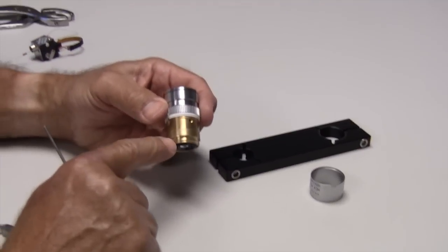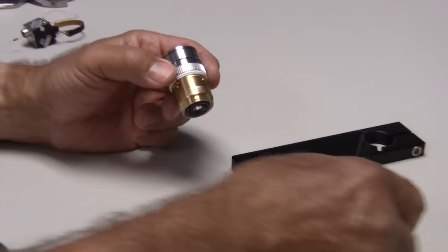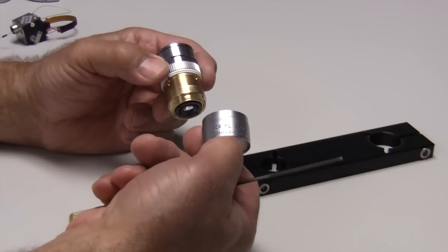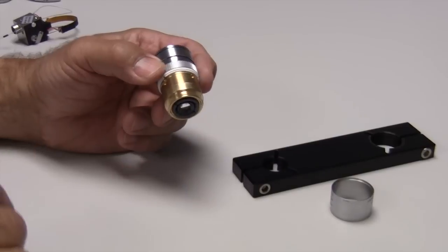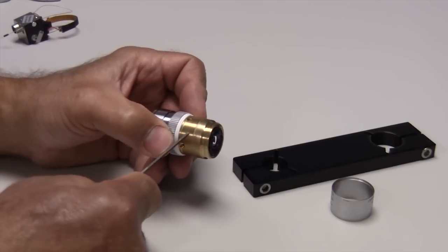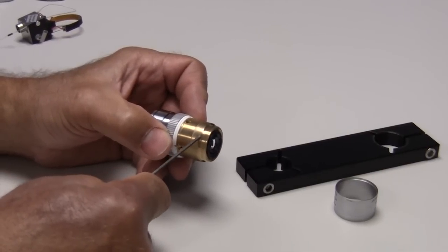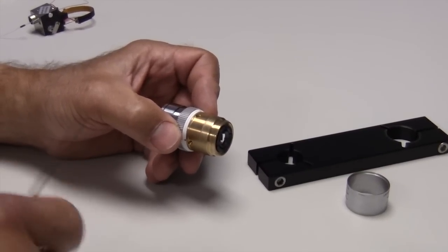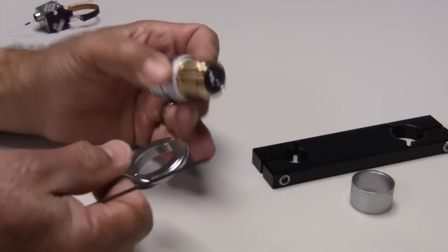Here we have a Leica 100X objective that has had the sleeve removed from the bottom of it that has the writing on it. This is to allow direct thermal contact with the base of the objective. You'll notice a little raised area right here, and that is where we need to apply the bioptics cooling ring.